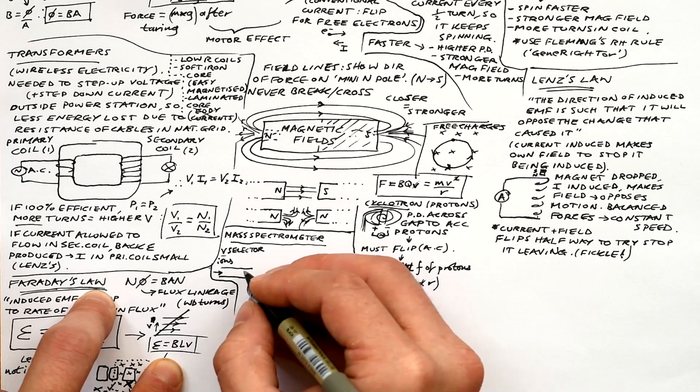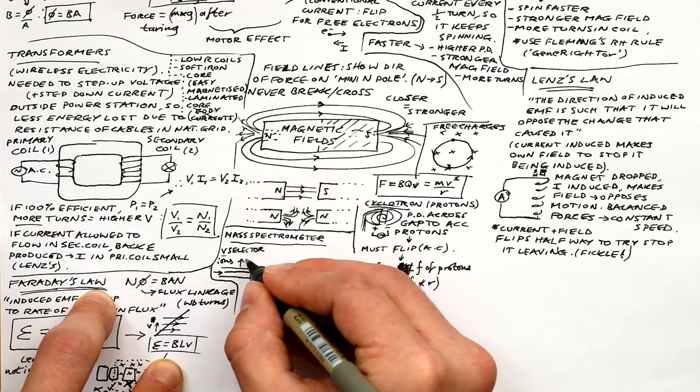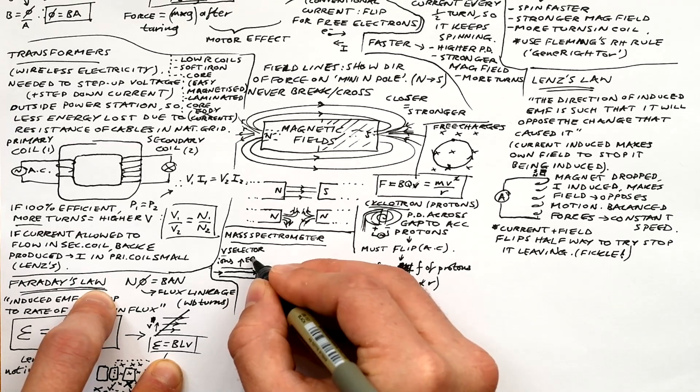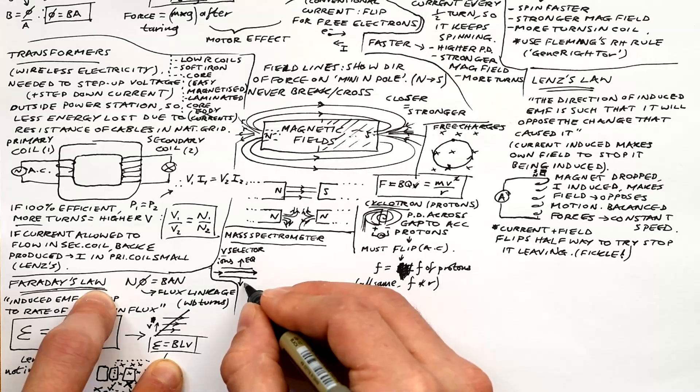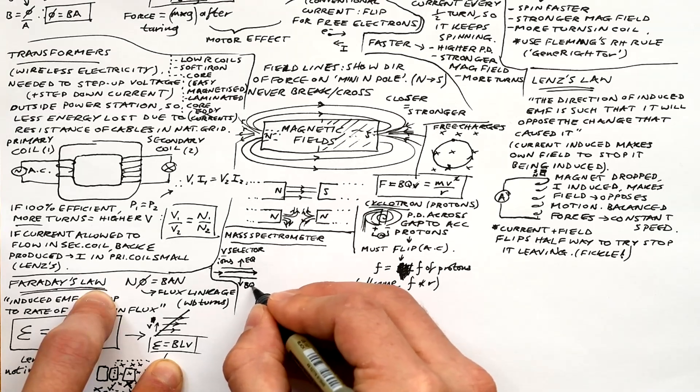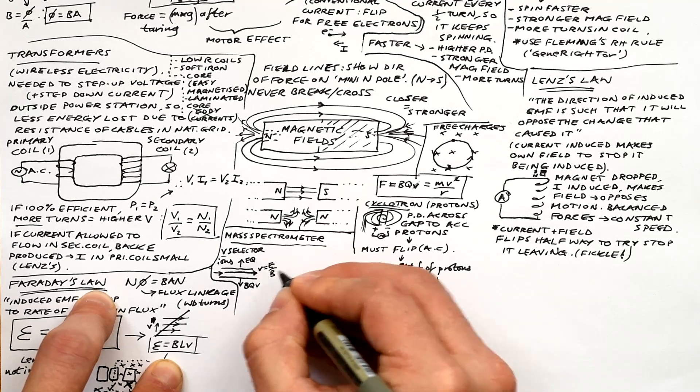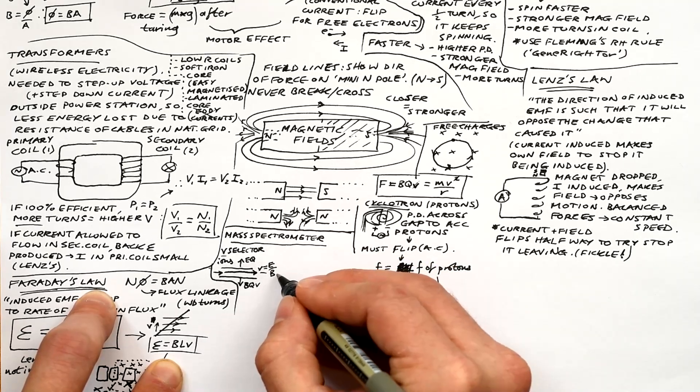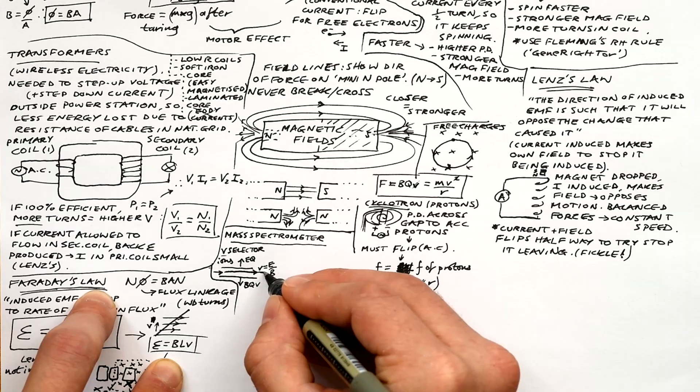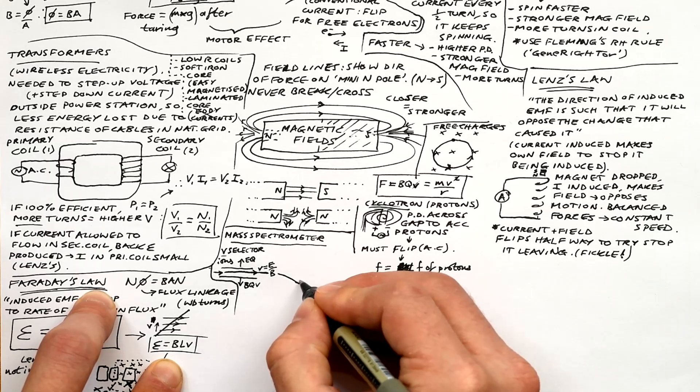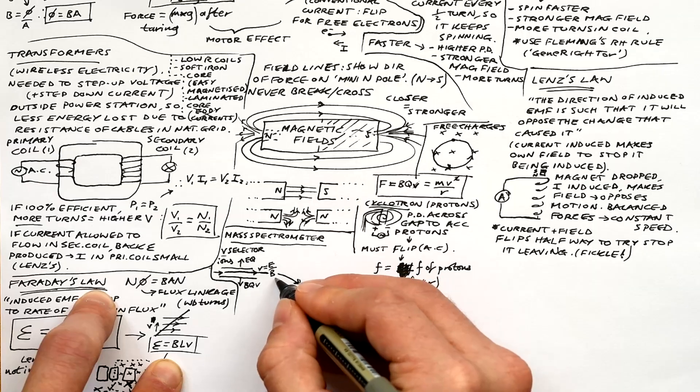Another application is mass spectrometry. We take atoms or molecules, we ionize them, so they're positively charged. First of all, we put them through a velocity selector where we have an electric and the magnetic field. And it's only particles that have a speed that is equal to the electric field strength divided by the flux density go all the way through. They're the only ones for which force due to the electric field and the force due to the magnetic field are equal and opposite.